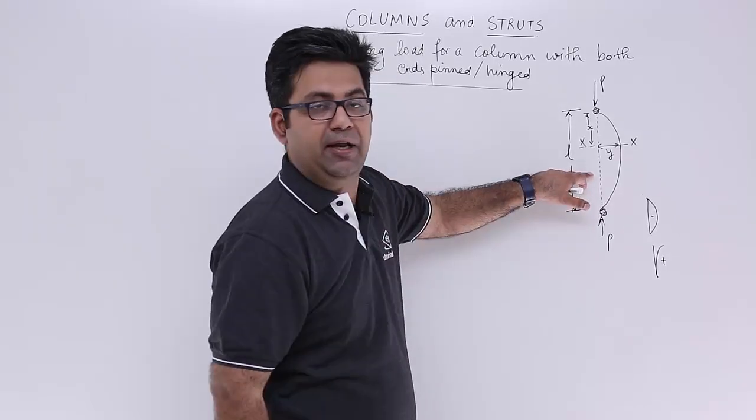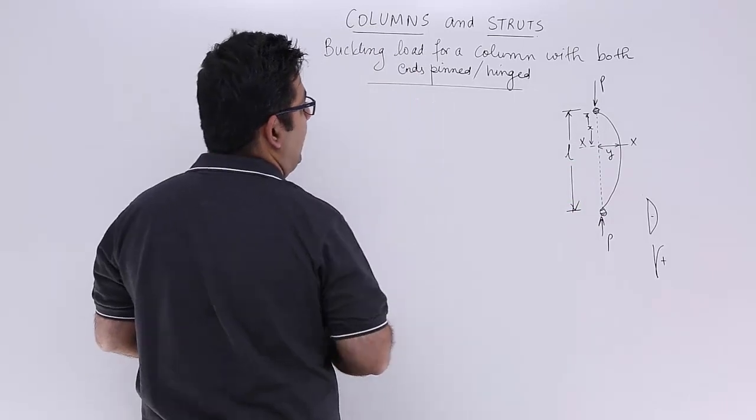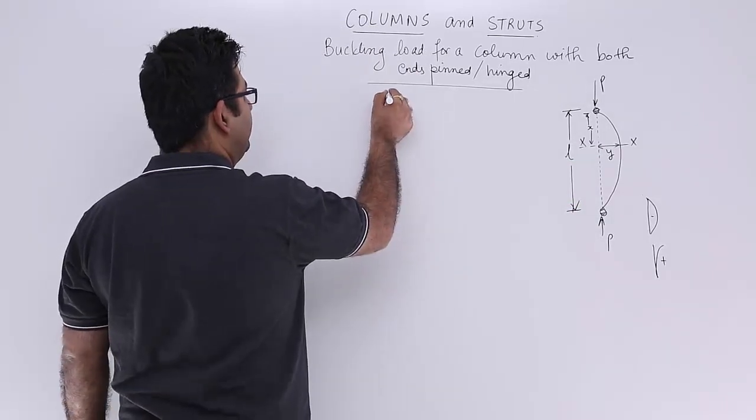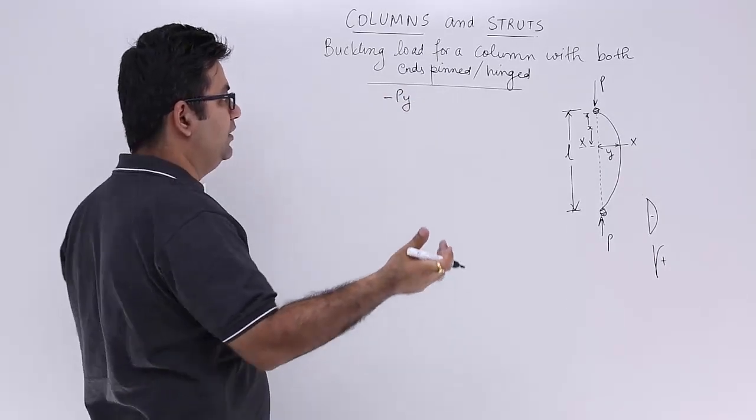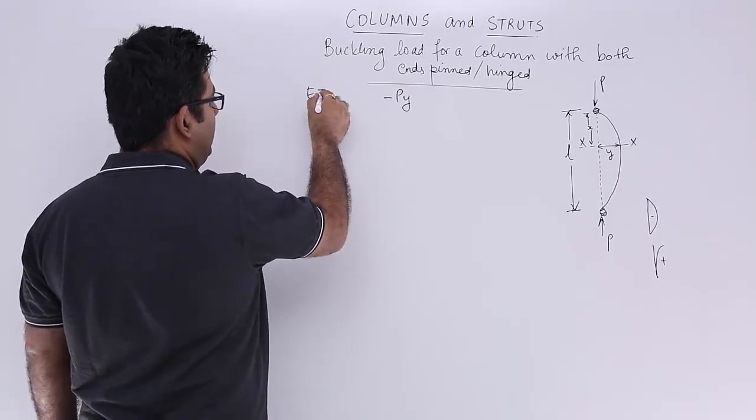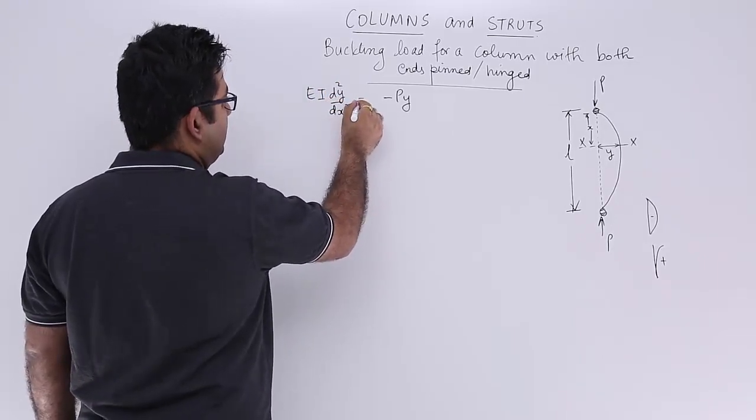Let's find out the bending moment at the section XX. You will have minus P into y, that's the bending moment. Now as per the videos that we have done on deflection, this is what you get: EI into y double dash is equal to minus Py.